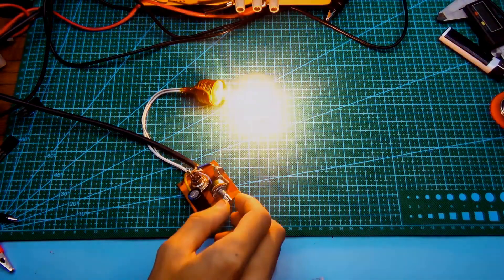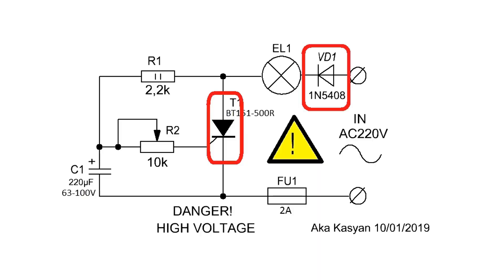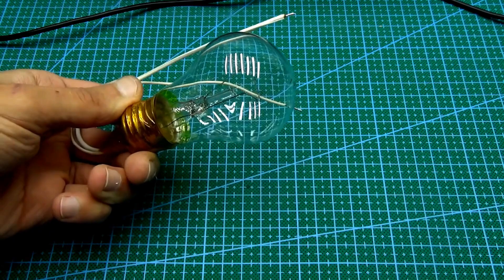Using several such circuits, you can build a high-power garland. The thyristor and rectifier diode are selected based on the power of the load. In our case, the load will be a 100-watt incandescent lamp.